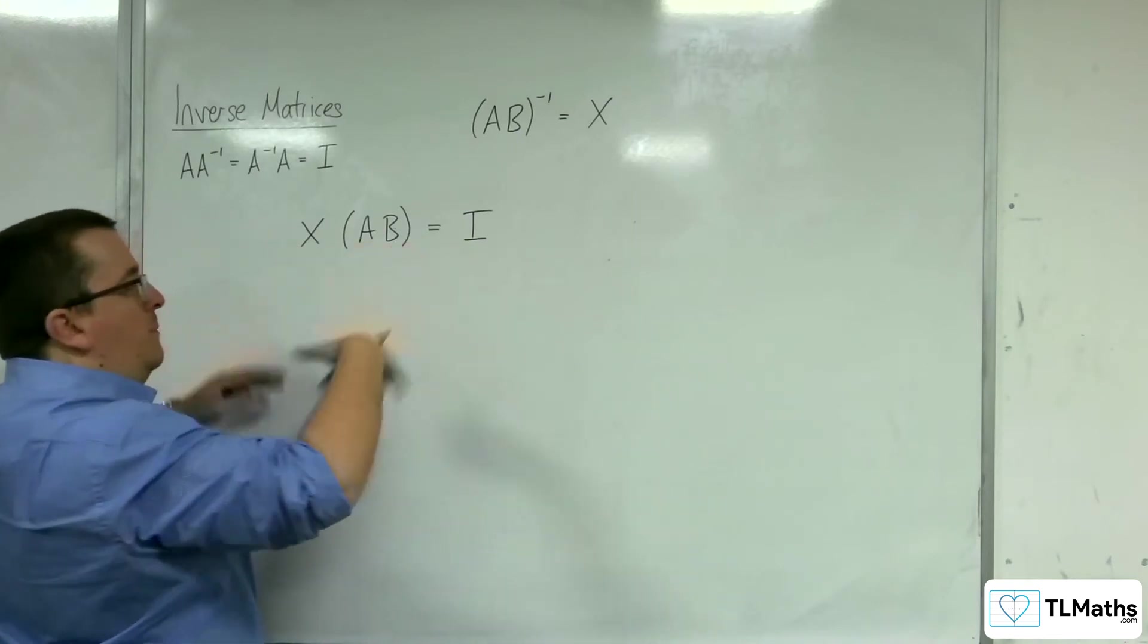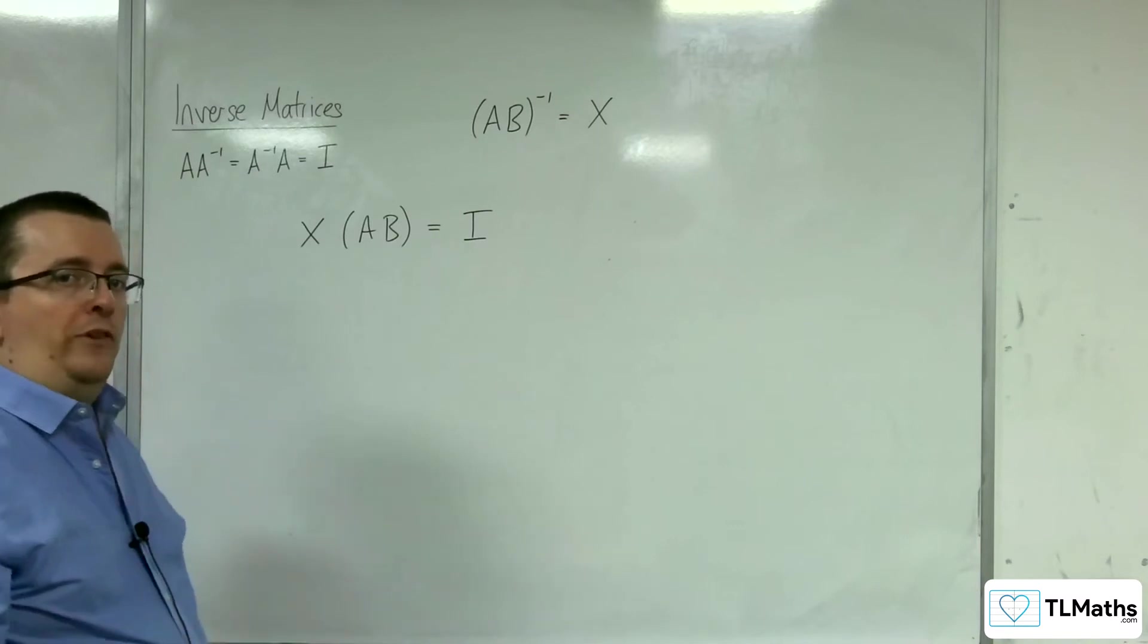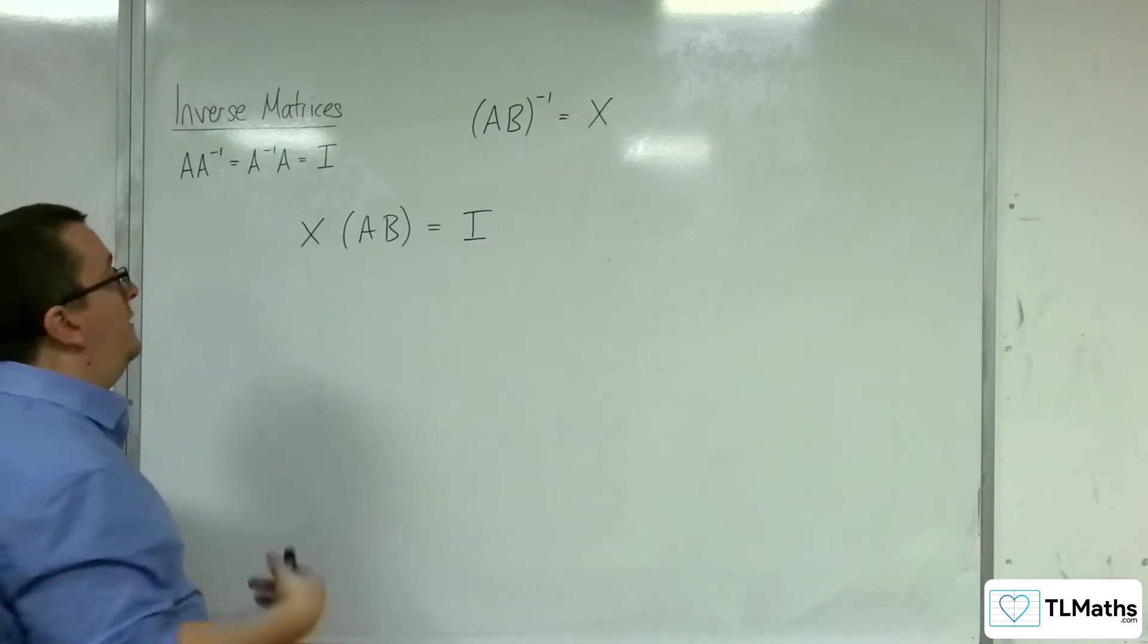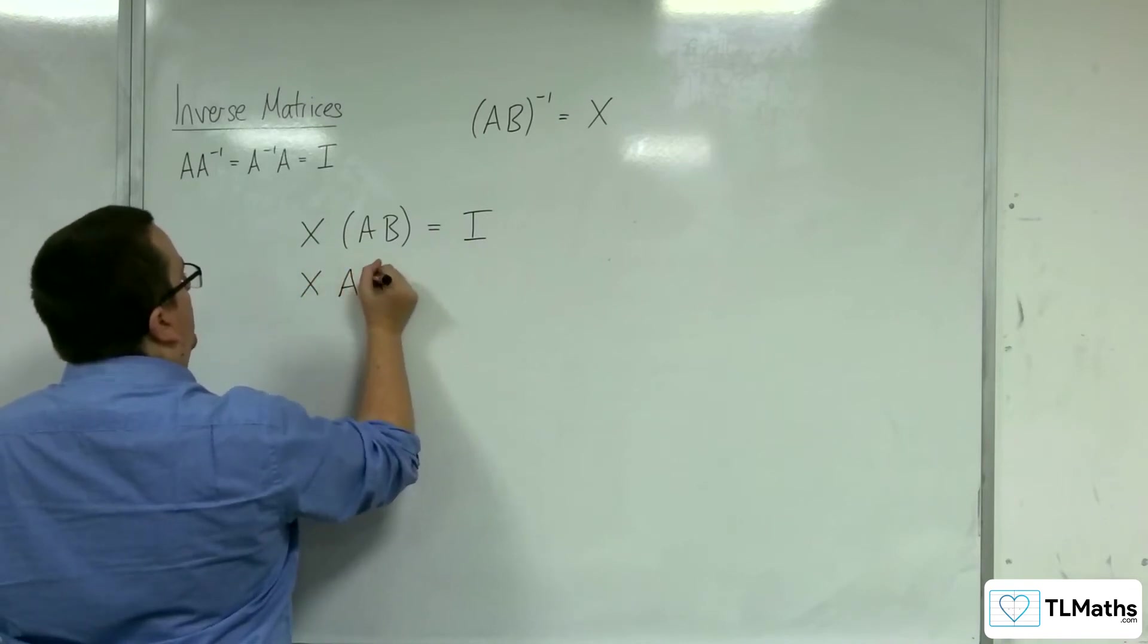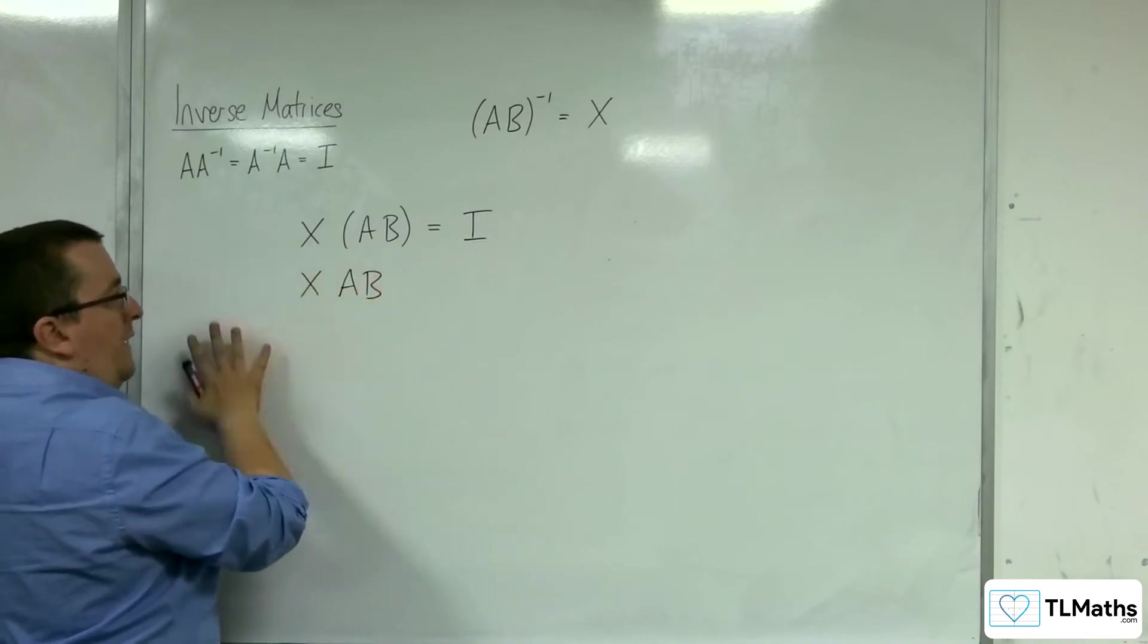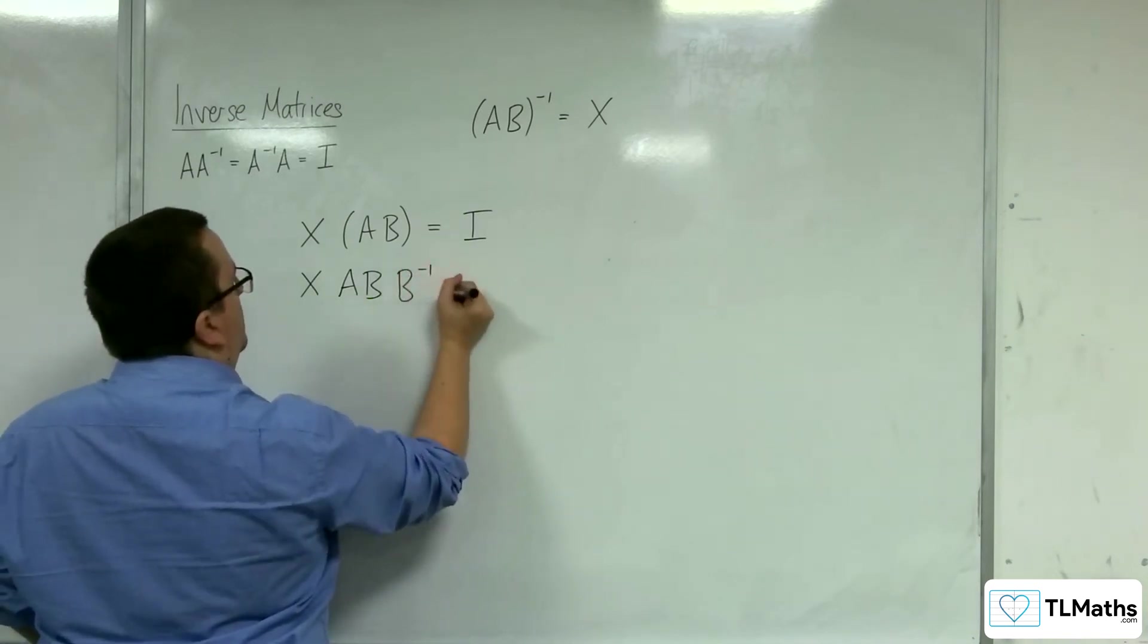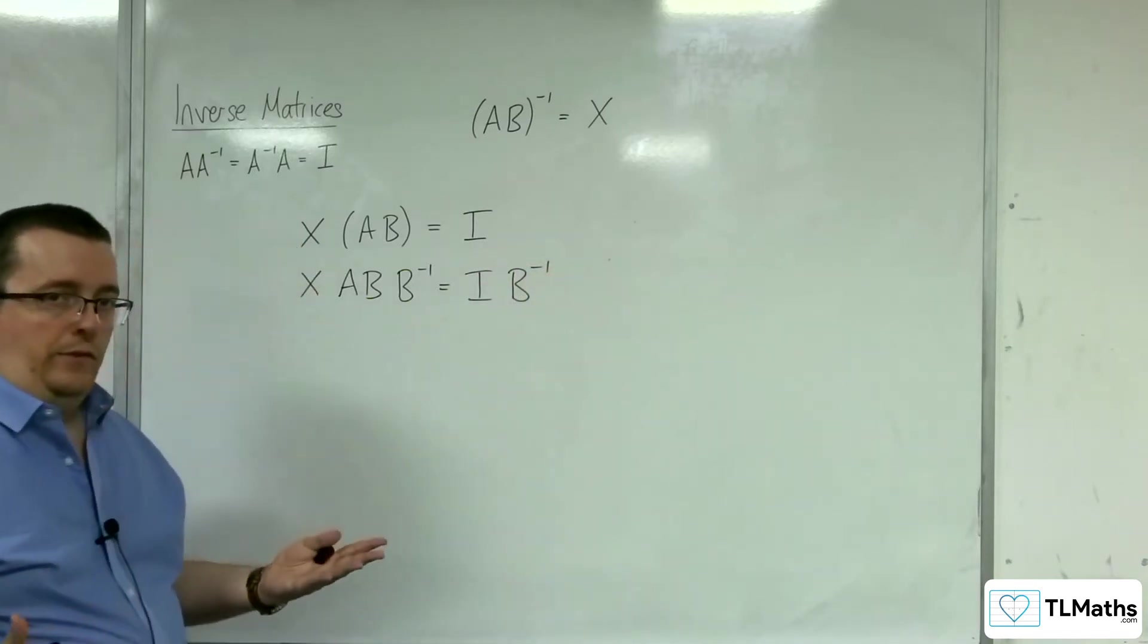And if I then post-multiply the inverse matrix of B, and remember B is non-singular so that exists, I can write this as X, well I can write that first as XAB, so it doesn't matter if I remove the brackets first because we understand that that won't make a difference. So then if I apply B^(-1), I get this.